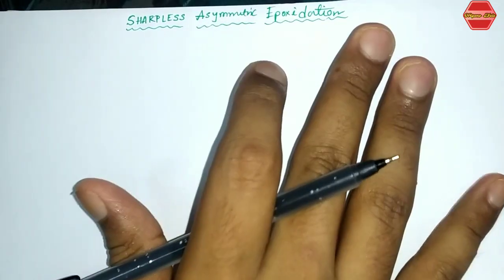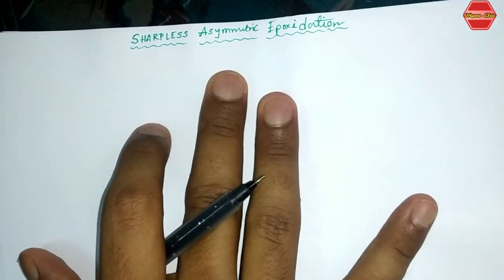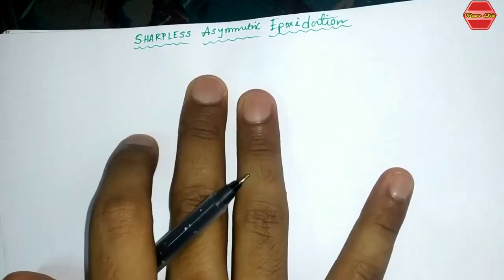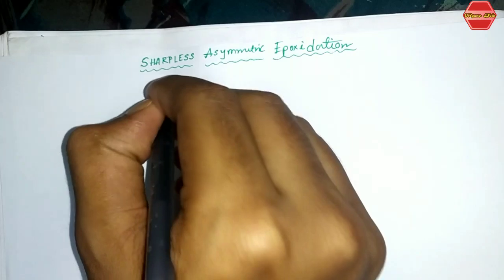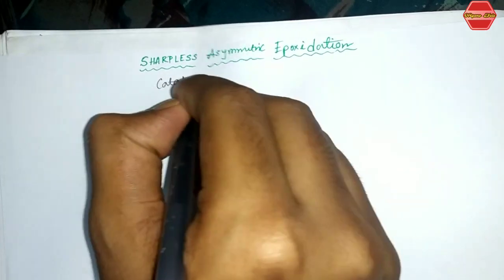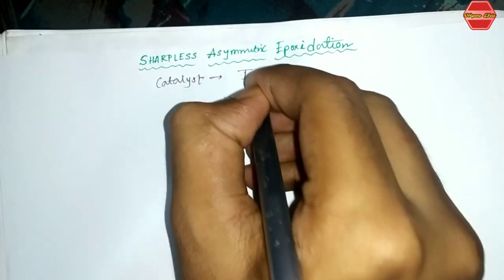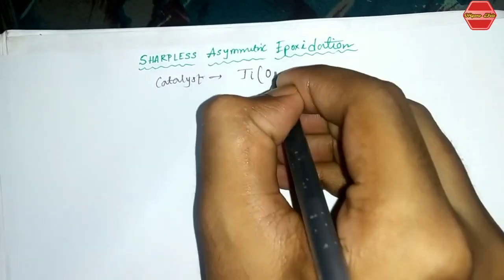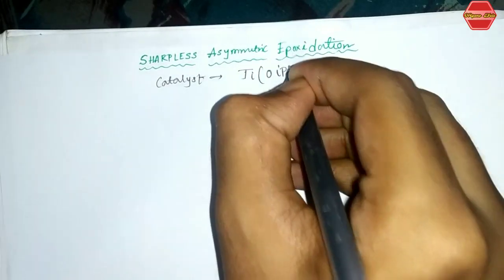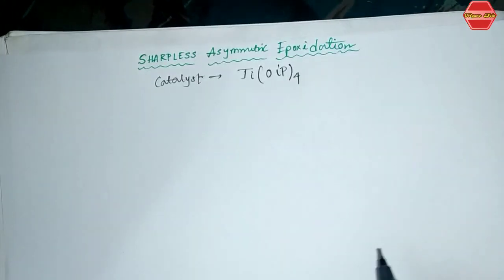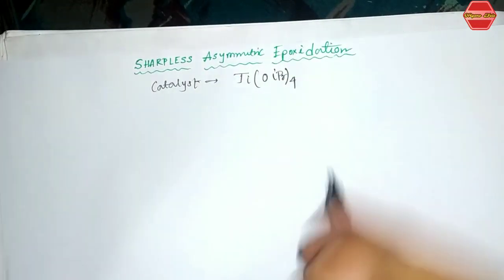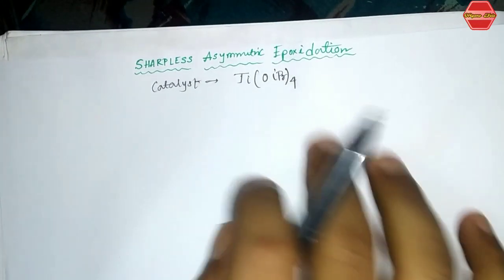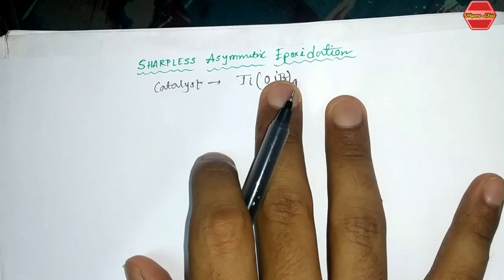First, you need to know the catalyst used. The catalyst used for Sharpless asymmetric epoxidation is a titanium complex — specifically titanium isopropoxide, Ti(OiPr)₄. This is your catalyst.